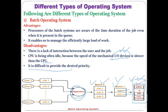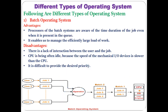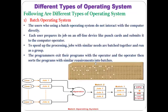The third disadvantage is that it is difficult to provide desired priority to jobs. Only the similarity of needs is considered when creating batches; priority is not considered. Even if a high-priority job is submitted, the operator will not give it priority. These are the key points related to the batch operating system.